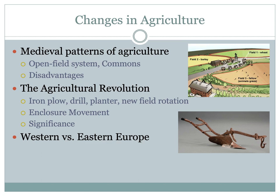The enclosure movement is another important component of the Agricultural Revolution, because it dismantled the open field and commons system. This was when landlords began to enclose or consolidate their lands to increase production — physically enclosing land with fences and hedges — which really brought an end to the idea of a common field for everyone to use.